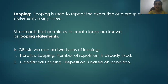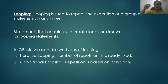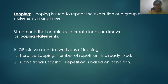The second type of looping is conditional looping. In conditional looping, the repetition is based on a condition. The first loop runs, then the condition is checked. If the condition is satisfied, the second loop runs. If the condition is not satisfied, the loop is stopped and it exits. So in QBasic, iterative looping has a fixed number of repetitions, and conditional looping repeats based on a condition.